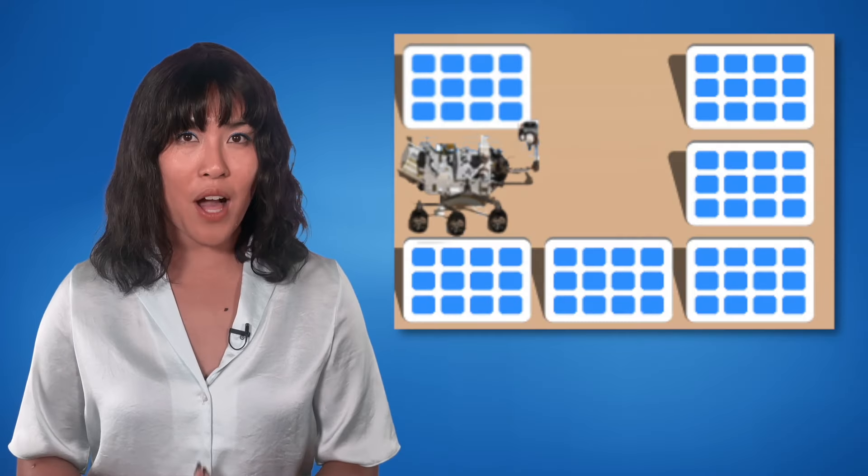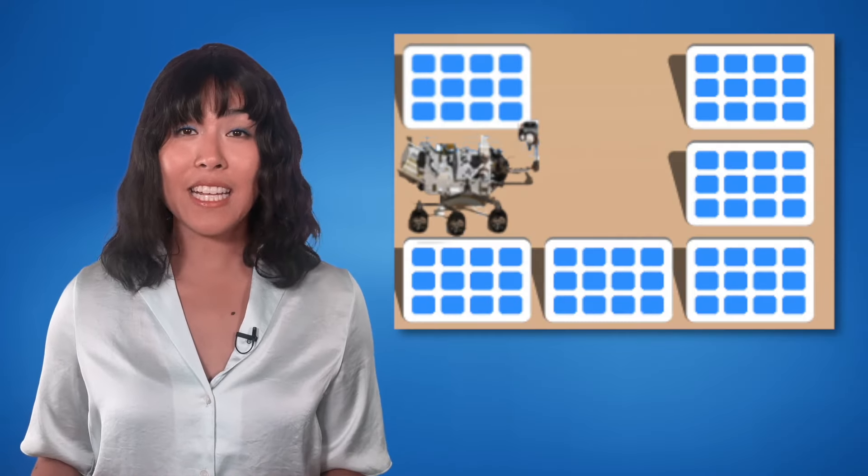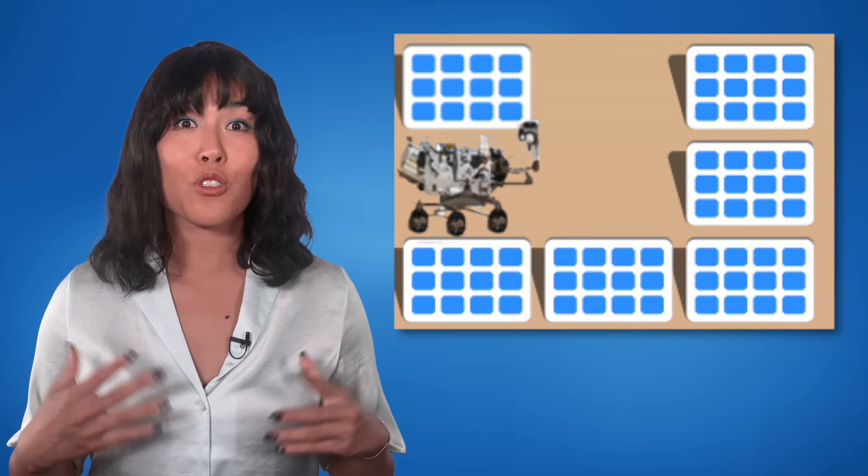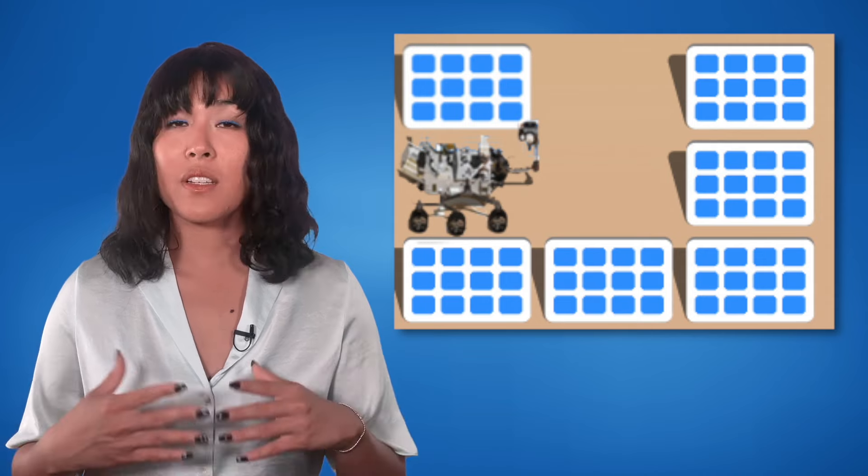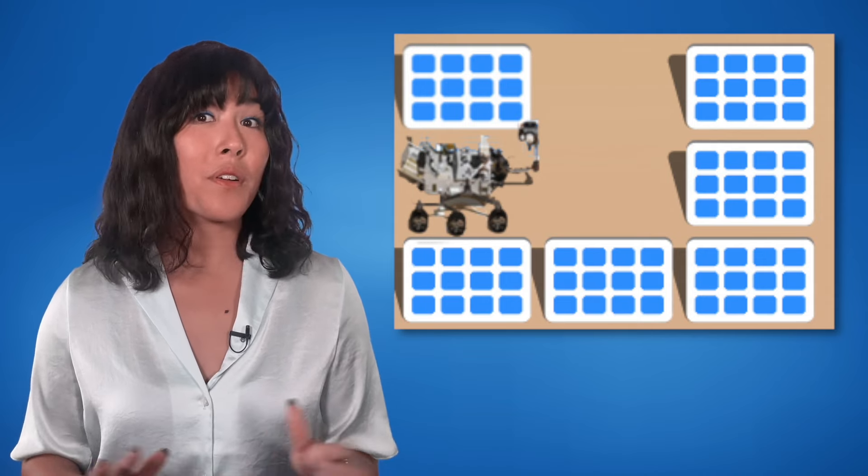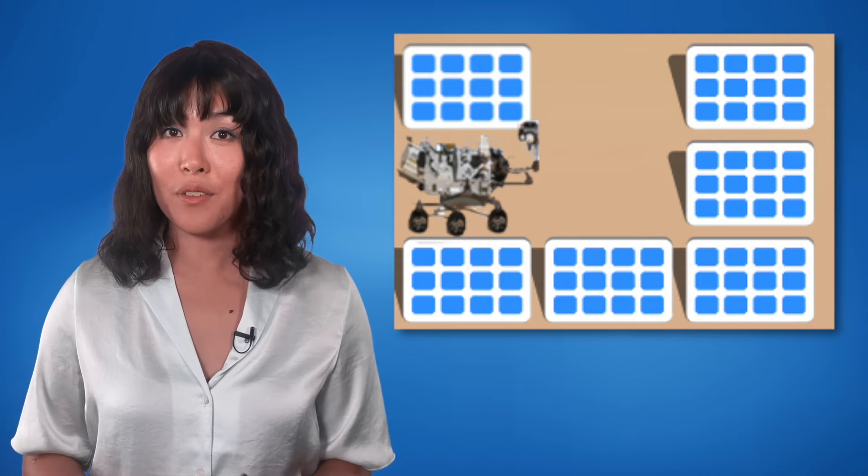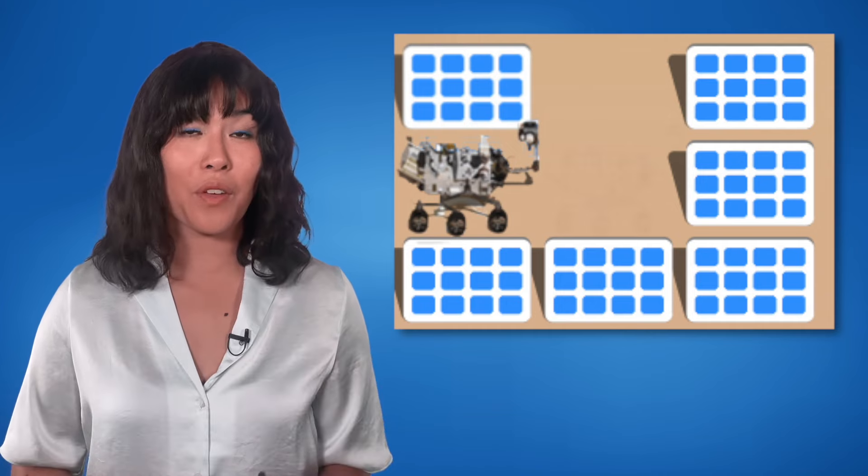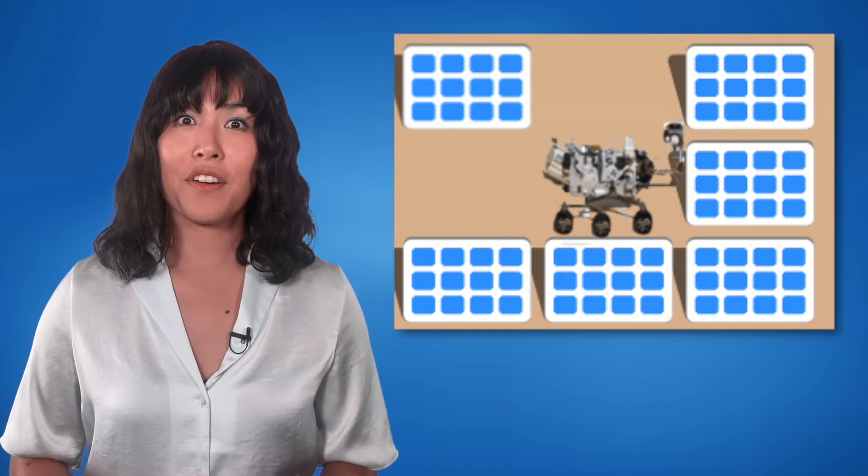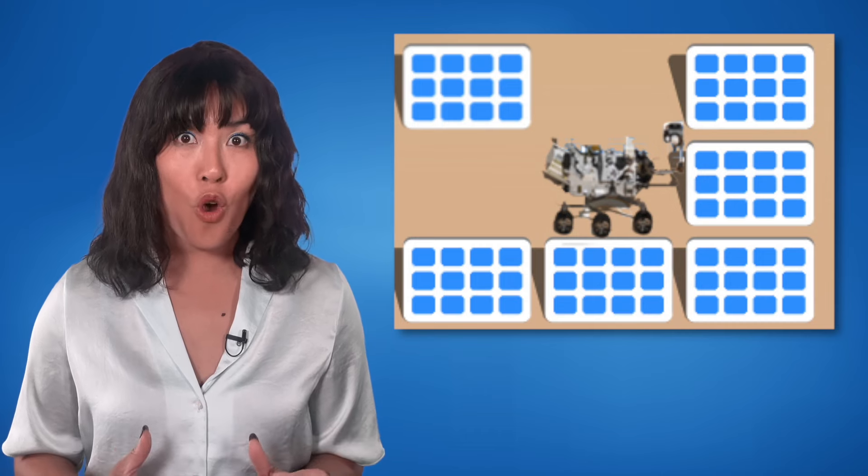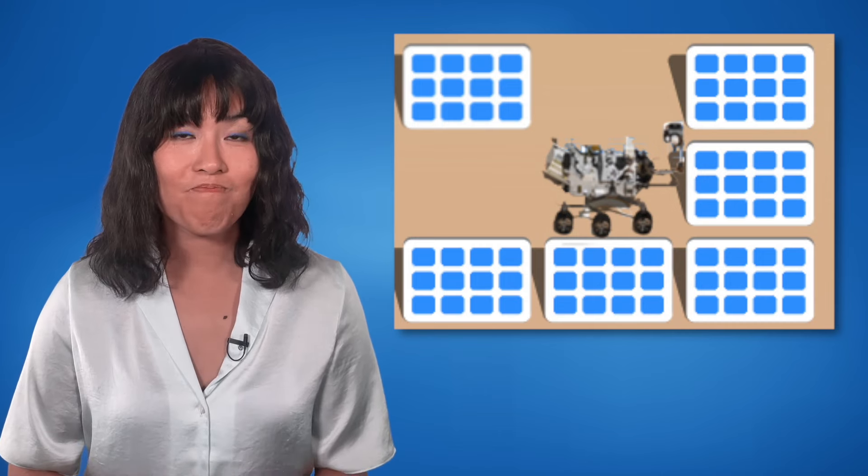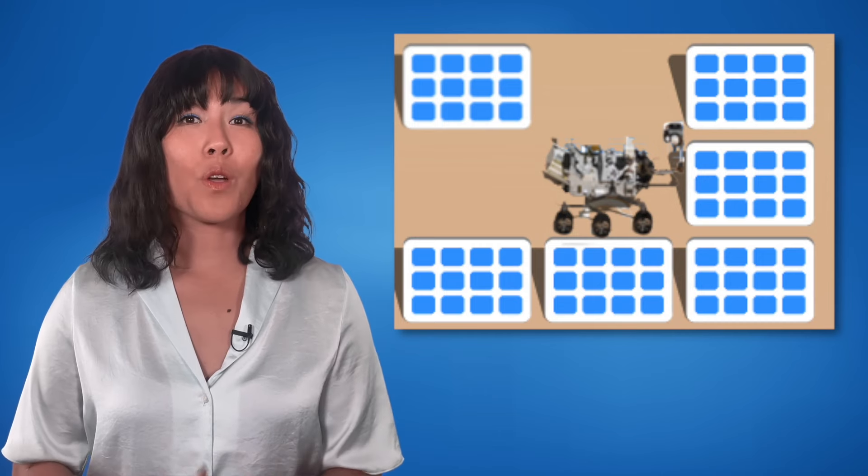In order to write our algorithm, we first need to get data from our sensor about our surroundings. The sensor can give us one of two readings. Either there is something in front of us or there isn't. If there is nothing in front of us, we can continue moving. If there is something in front of us, then we have a decision to make. Do we turn left or do we turn right? Based on the layout of the maze, we will make our choice.